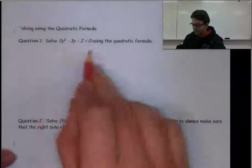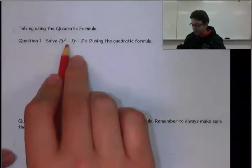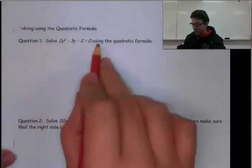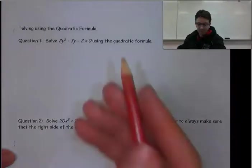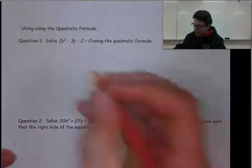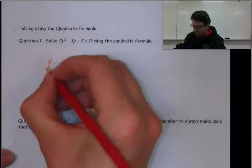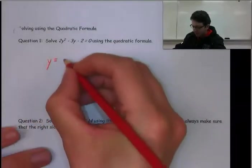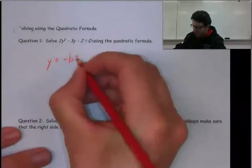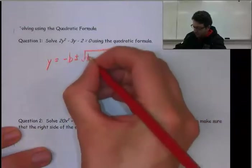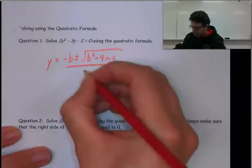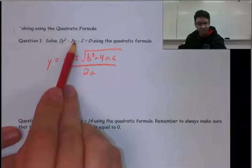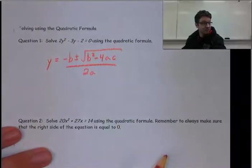Question 1: solve 2y² - 3y - 2 = 0. The quadratic equation said x equals, but in this equation we're using y's. Don't let that scare you. We can rewrite it to say y = -b ± √(b² - 4ac) over 2a. In this case, y is our variable, so that's the one we're trying to find the roots for.